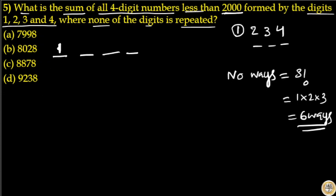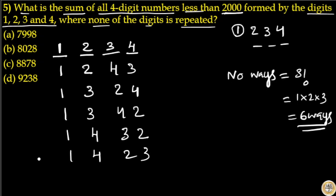The 6 ways are: 1 is fixed, the remaining digits 2, 3, and 4. 1 is fixed, second place 2 comes, then 3 and 4 interchange to 4 and 3. Again 1 is fixed, second place 3 comes, remaining are 2 and 4, then 4 and 2. Again 1 is fixed, second place 4 comes, then 3 and 2, then 2 and 3. These are the 6 ways.